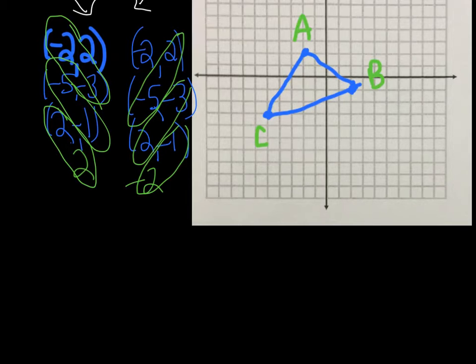So watch. And the area is going to be half of our products here. We get, let's take a look, negative 2 times negative 3, which is going to give us positive 6, and we have negative 5 times negative 1, which is positive 5, and 2 times 2, which is plus 4.